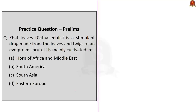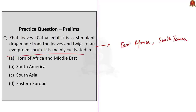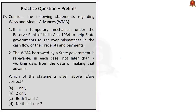The next question asks about cut leaves — a stimulant drug made from the leaves and twigs of an evergreen shrub — and asks where it is mainly cultivated, with options including horn of Africa and Middle East, South America, South Asia, and Eastern Europe. During discussion we saw that cut leaves are mainly cultivated in East Africa and South Yemen. Horn of Africa is in East Africa, and Yemen is in the Middle East, so the correct answer is option A: horn of Africa and Middle East.